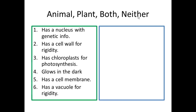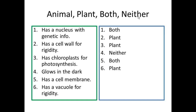Let's check the answers. The nucleus is found in both. The cell wall is just in plant cells. Chloroplasts are just in plant cells. 'Glows in the dark' is neither. Cell membrane is both. And the vacuole is just in plant cells. Remember to write down your total score — how many did you get right out of six?